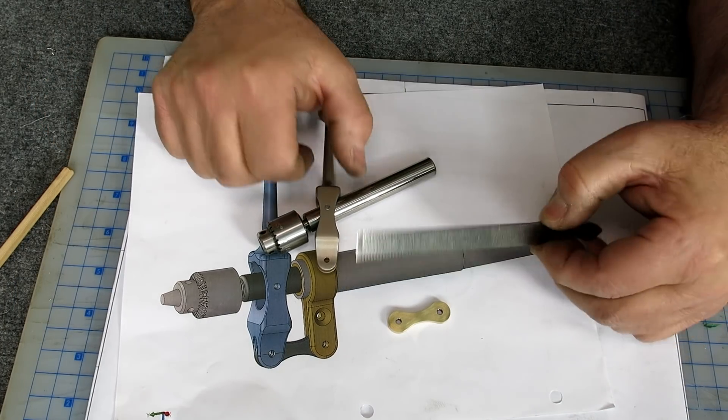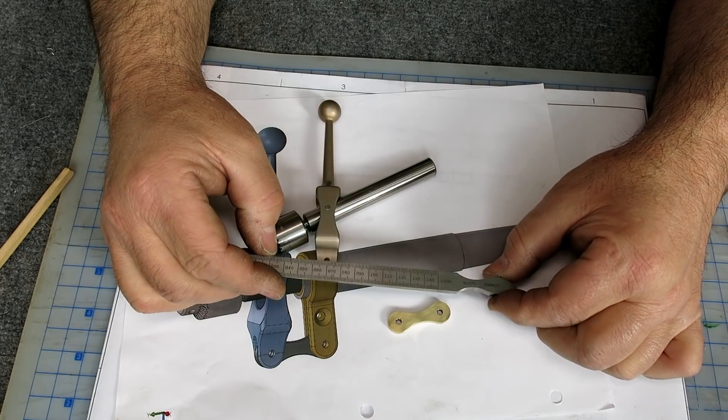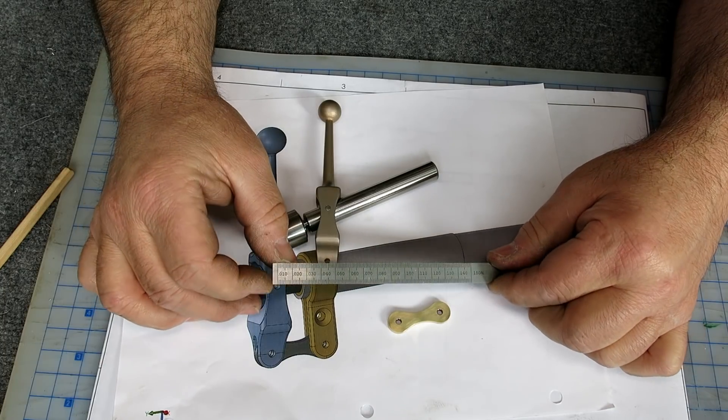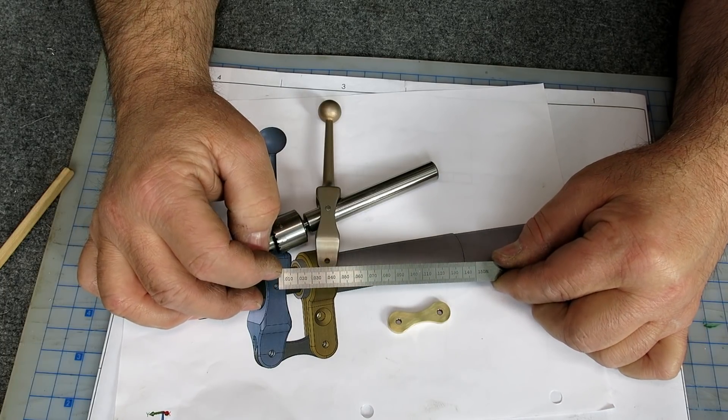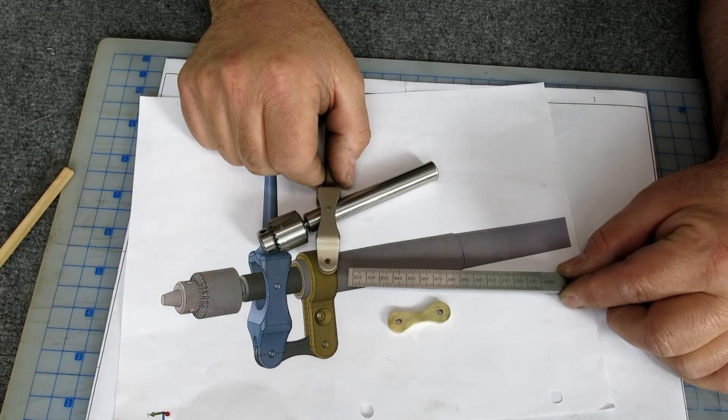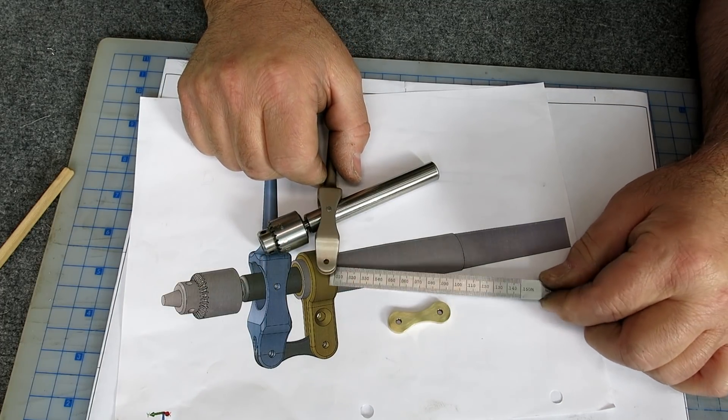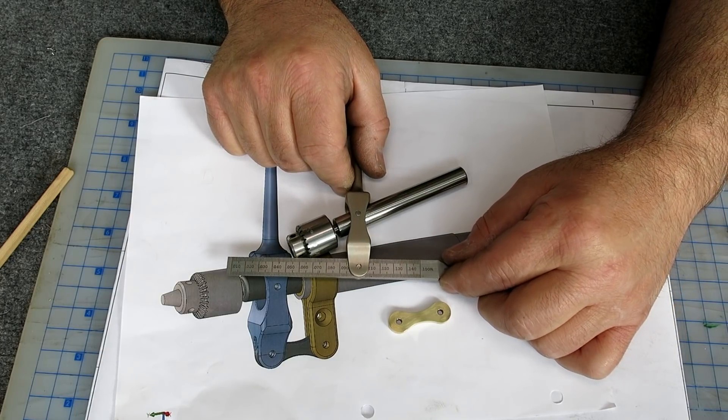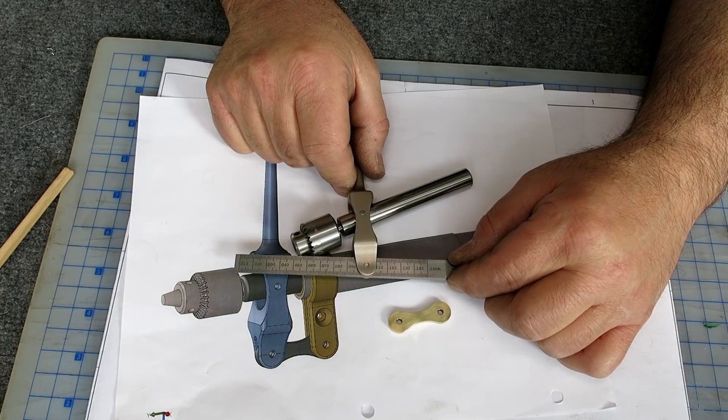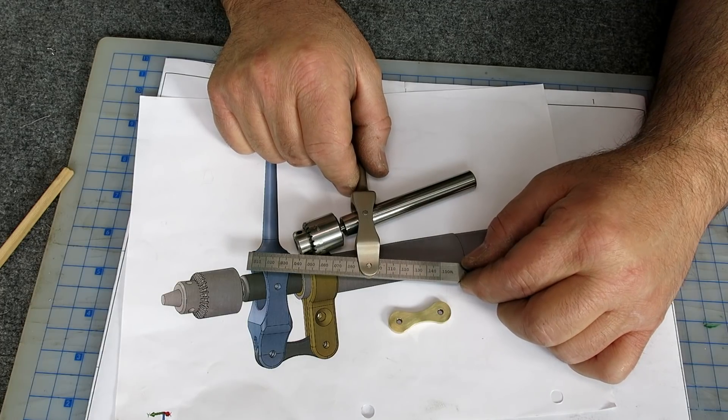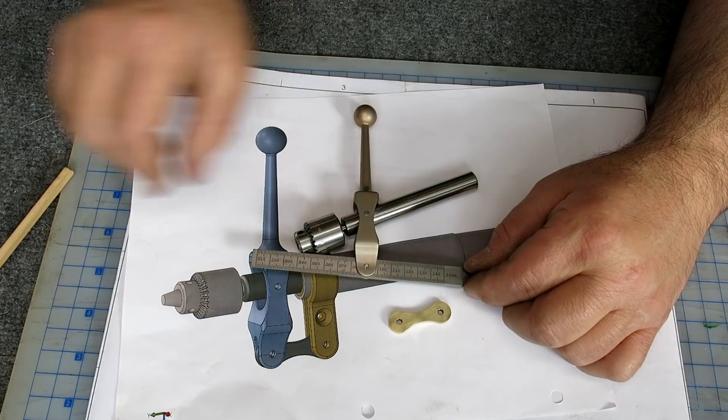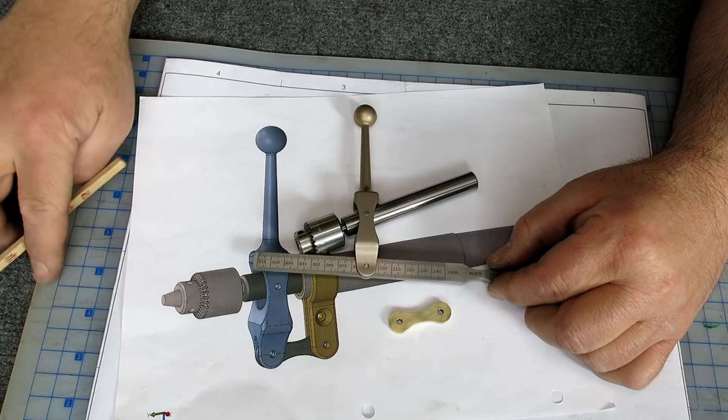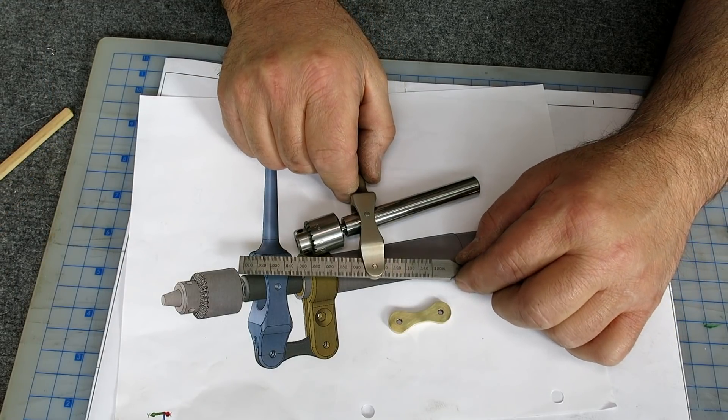So, I don't know if you guys have ever seen this. This is a Starrett 270 taper gauge. These are kind of neat, they go down to 10 thou. So they're really cool for measuring little spaces like this. Basically the idea is that you just shove it in there and then read the number. So what do we got? 115. So this is 110, 115, 120, right?